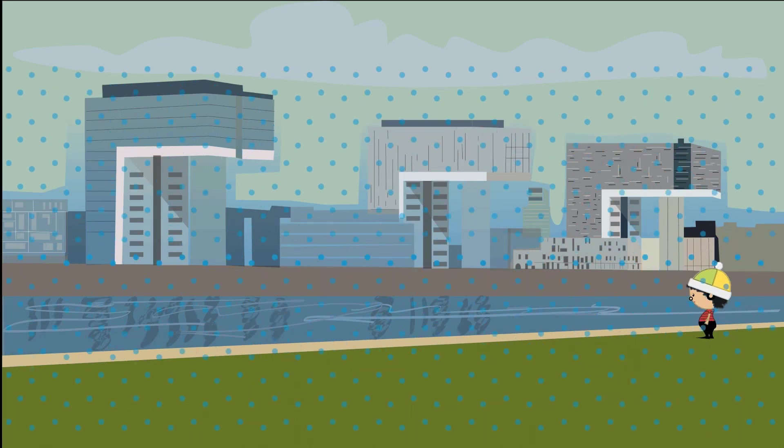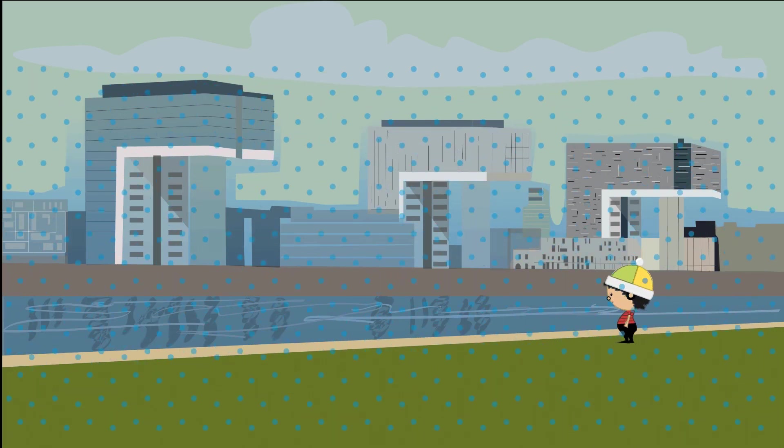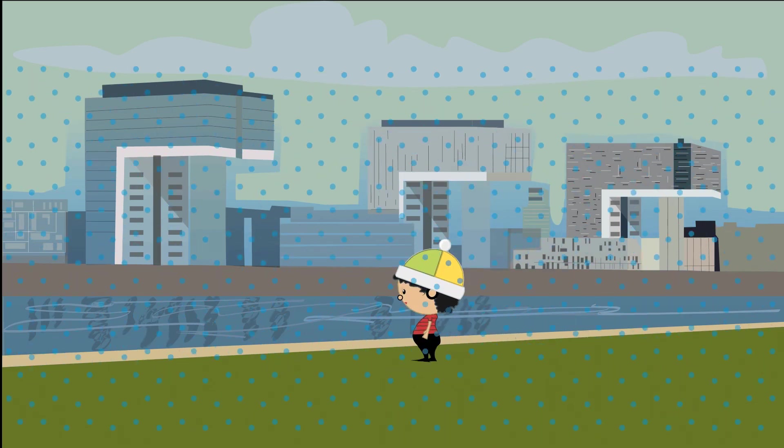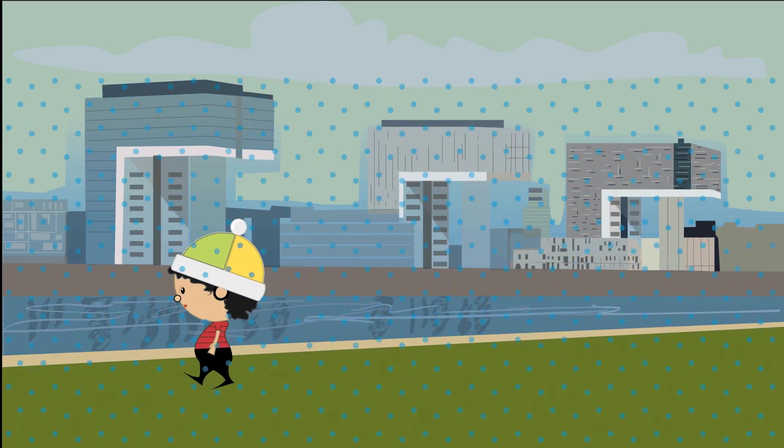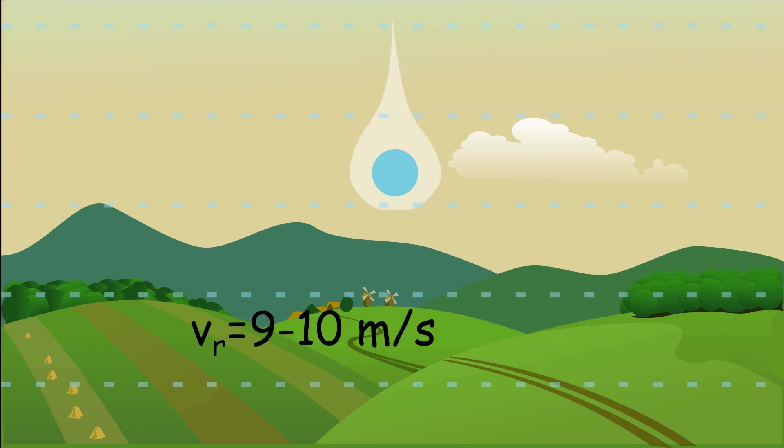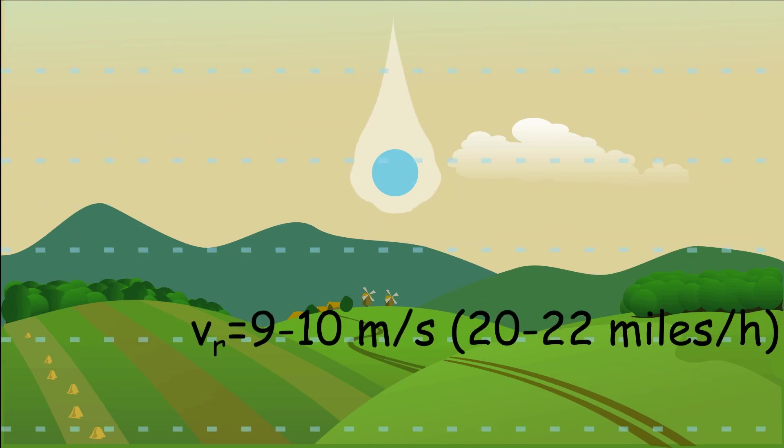In this video we will try to answer this question using some simple math, also analyzing what happens when rain falls under an angle or if you are extremely fast or slow. Because of air resistance, raindrops fall with an almost constant speed and close to the ground they fall in average with a speed of 9-10 meters per second.